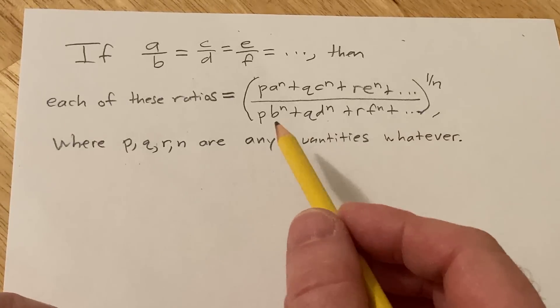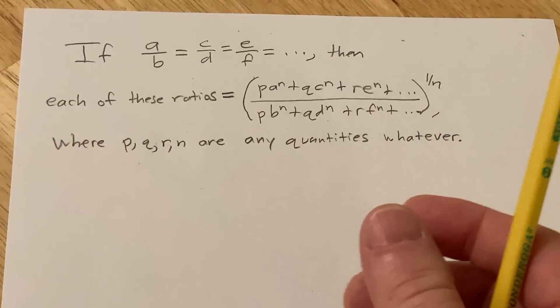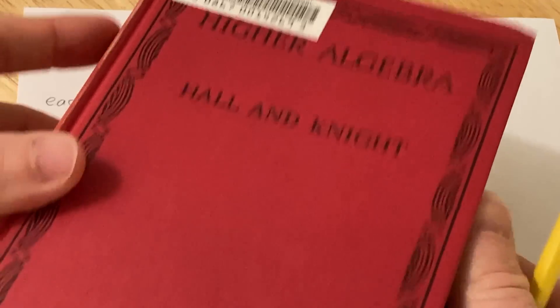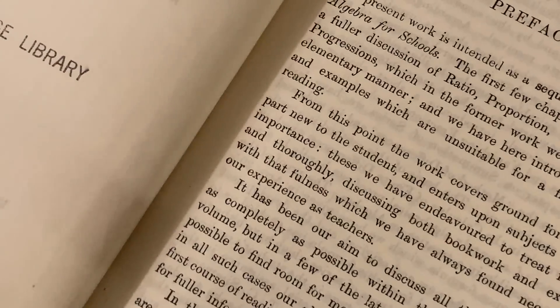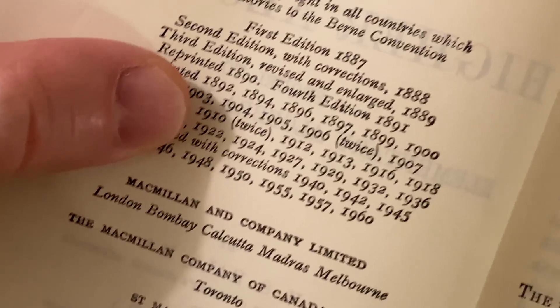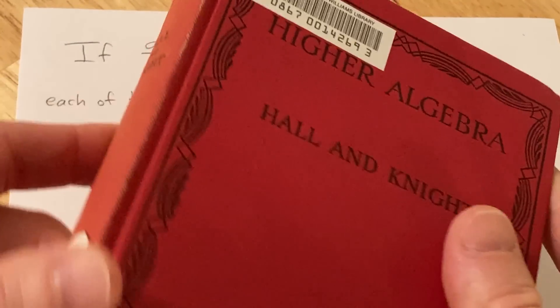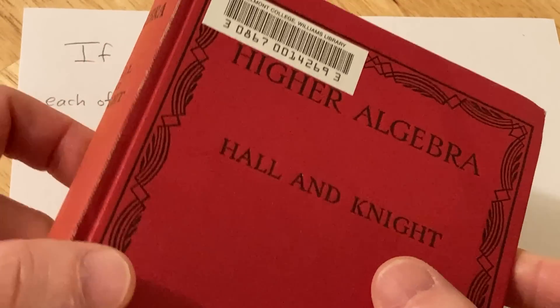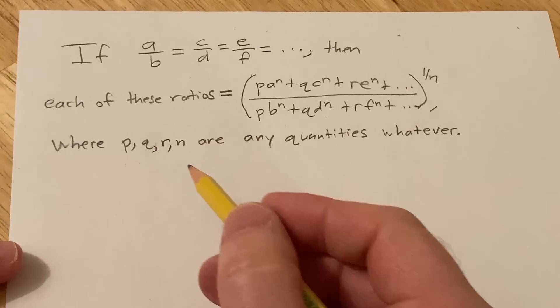This problem is from a really old book that I believe was originally published in the 1800s. The book is called Higher Algebra, by Hall and Knight. The first edition was published in 1887 — so a super old book. My copy was printed in Great Britain and is from 1960. This is a wildly popular book on higher algebra. It's got algebra in it, but it's a lot harder than typical algebra. So this is a problem in the book and we're going to work through it — it's pretty cool.